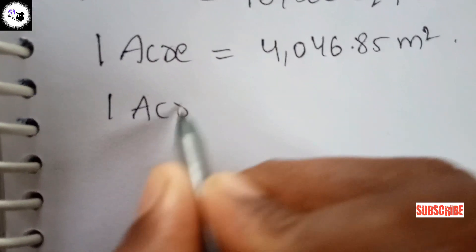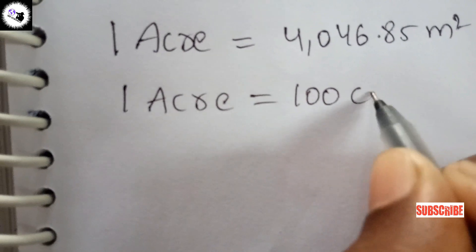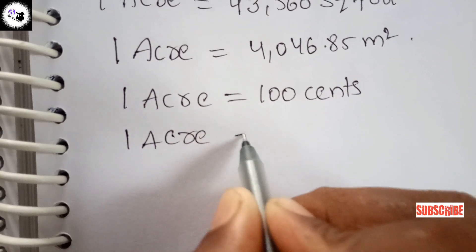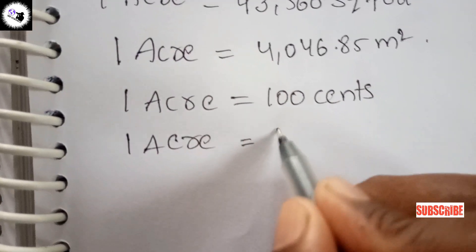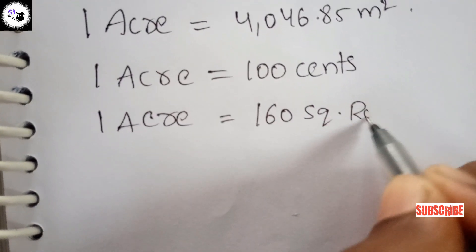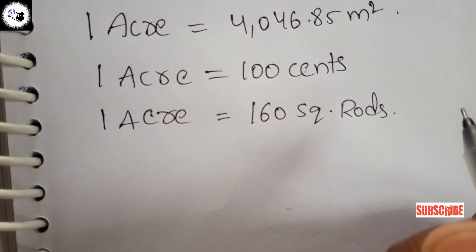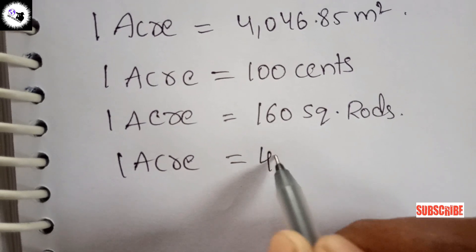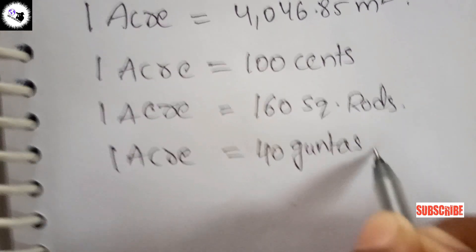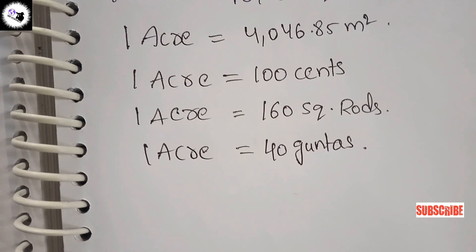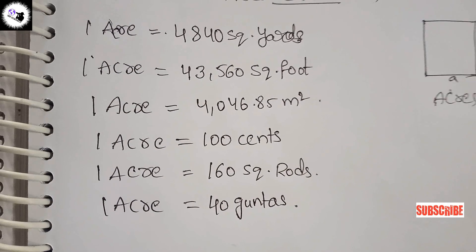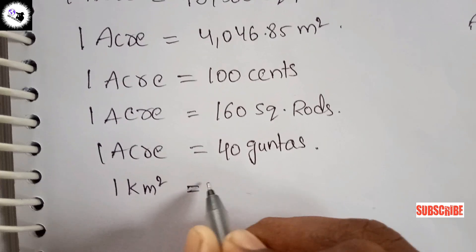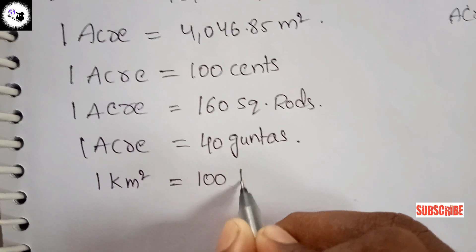One acre is equal to 100 cents, and one acre is equal to 160 square rods. One acre is equal to 40 guntas. And for hectares: one kilometer square is equal to 100 hectares.